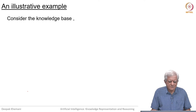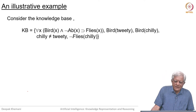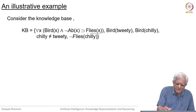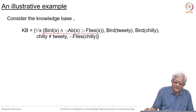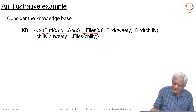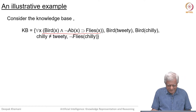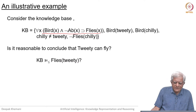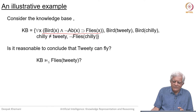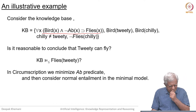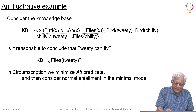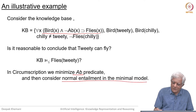Let us look at an example. We have a statement from circumscription — let us read it as: all normal birds fly. Then we have said Twitty is a bird, Chilli is a bird, they are not the same, and we know that Chilli cannot fly. So, is it reasonable to conclude that Twitty can fly? We know Chilli cannot fly, we know normally birds fly, and we would like to conclude that Twitty can fly. We minimize the AB predicate and then consider normal entailment in the minimal model.